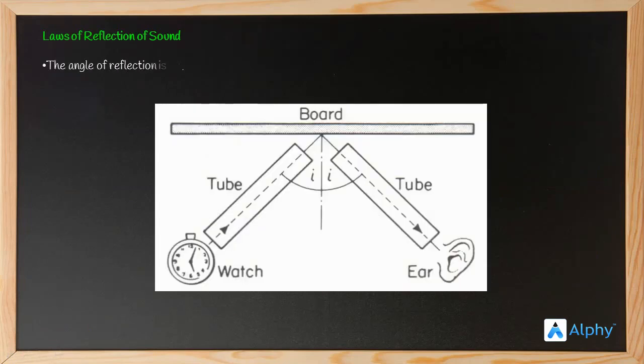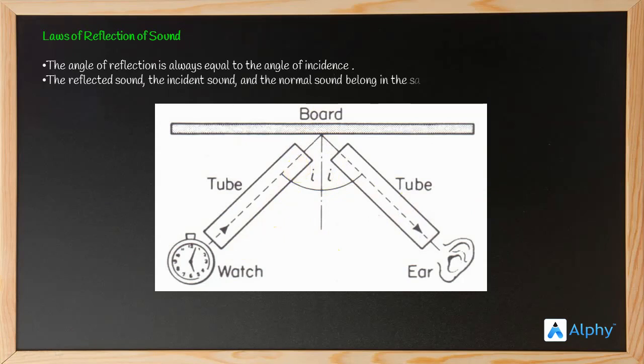Laws of reflection of sound: the angle of reflection is always equal to the angle of incidence. The reflected sound, the incident sound, and the normal all belong to the same plane. Here is the incident sound, here is the reflected sound, and this is the normal. All lie in the same plane. These are the laws of reflection of sound.